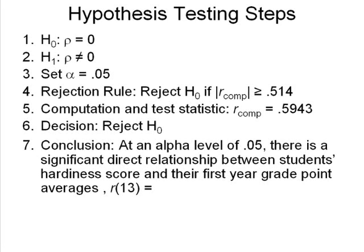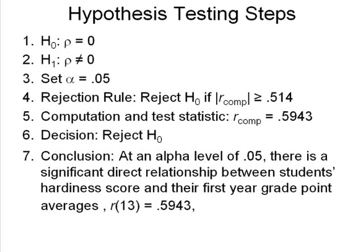The next thing is we just say what our R value ended up being from step number 5. In our case, it ended up being .5943. Now you might wonder, why am I not putting 0.5943? That has nothing to do with statistics or nursing — it has to do with APA format.